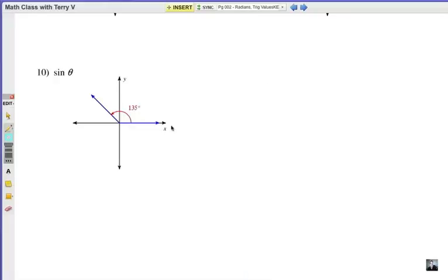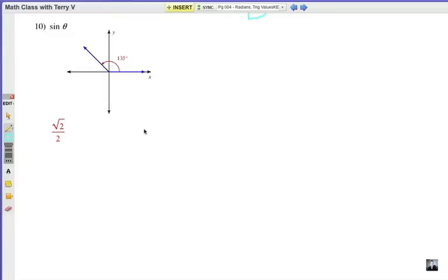All right. One more in this problem set. The sine of theta with a 135 degree angle. Go ahead. All right. Our answer is radical 2 over 2. Now, how do we get that? 135 degrees is 45 degrees shy of this 180 completely flat straight angle. So, if I construct the triangle there.